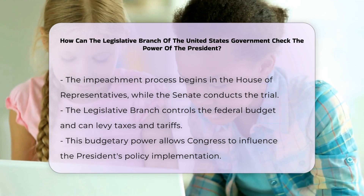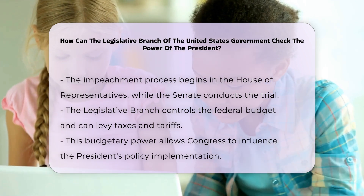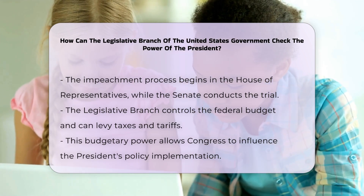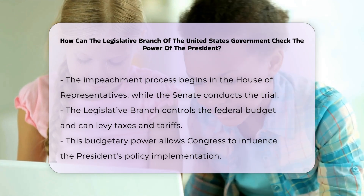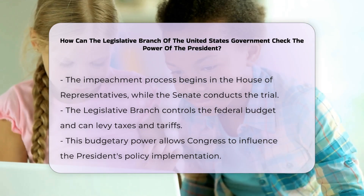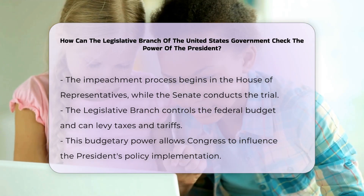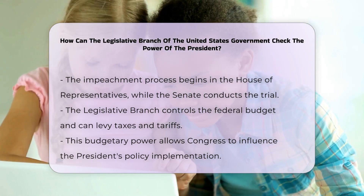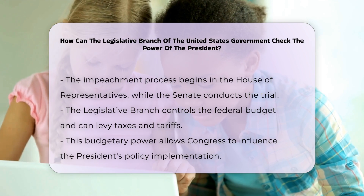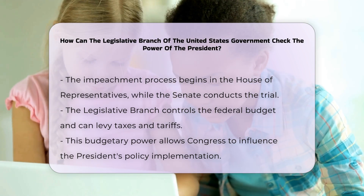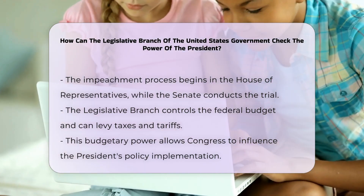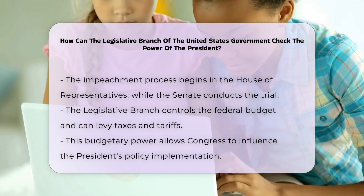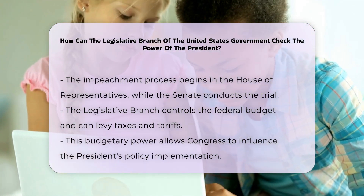Oversight. Congress conducts oversight of the executive branch through hearings and investigations. This includes the power to compel the production of evidence and testimony, which helps in monitoring the president's actions and ensuring accountability.